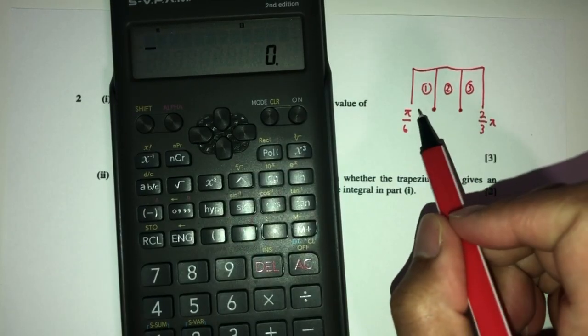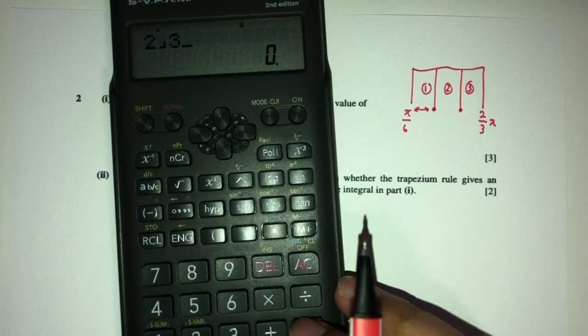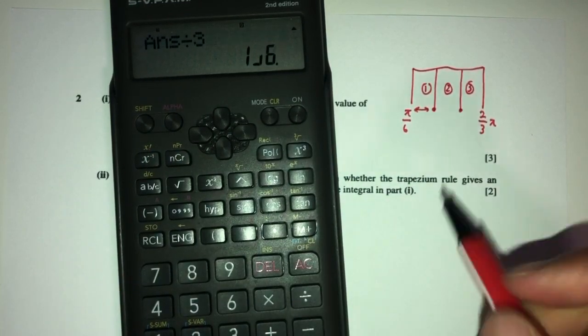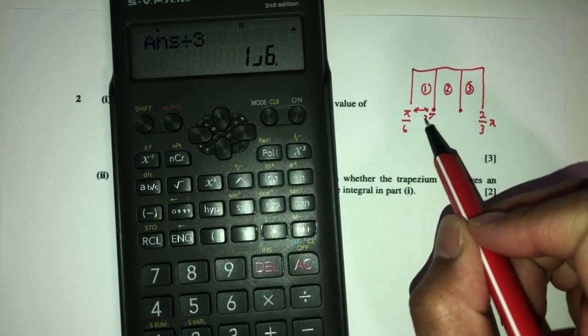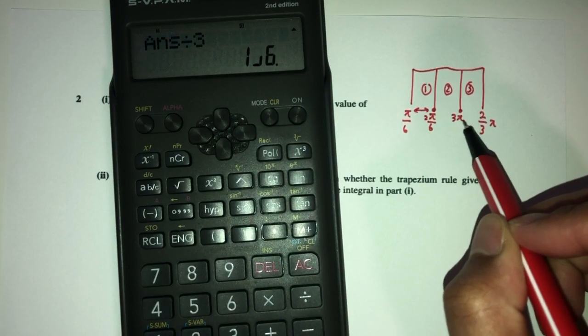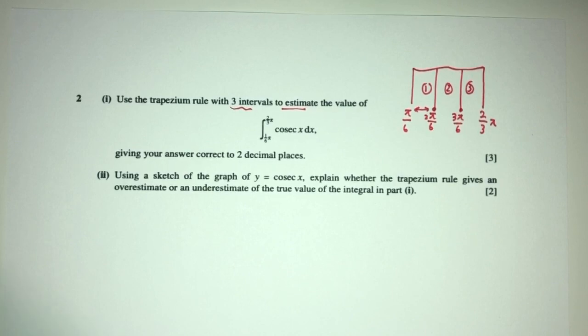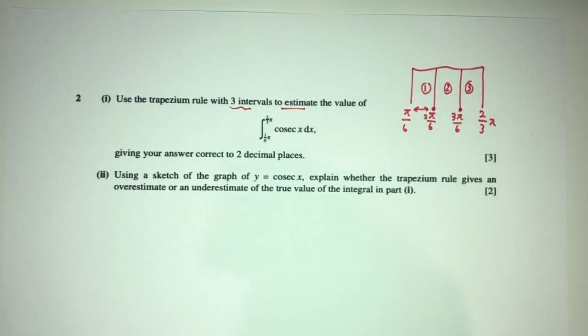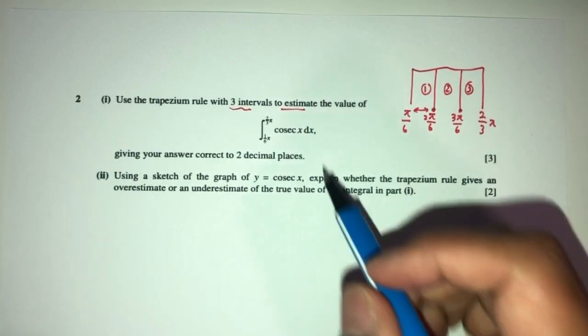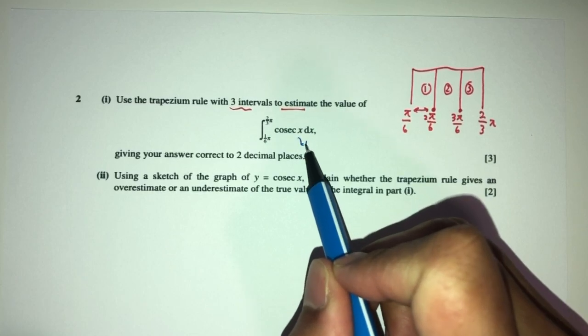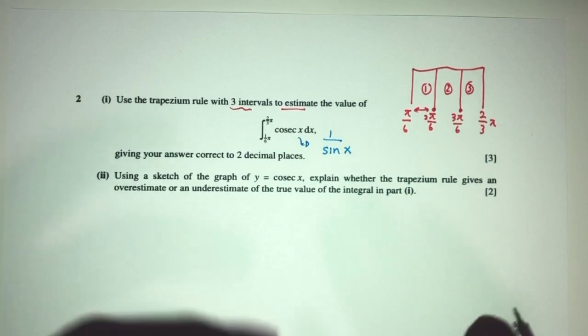We have one, two and three intervals. What are the values here and here? What is the width of the trapezium? That will be (2π/3 - π/6) divided by 3 intervals. Everything will be at π/6 intervals. That should be π/6, 2π/6, and 3π/6.